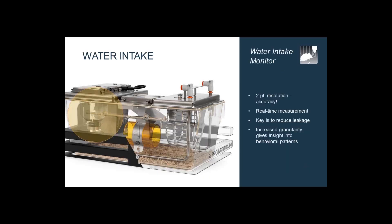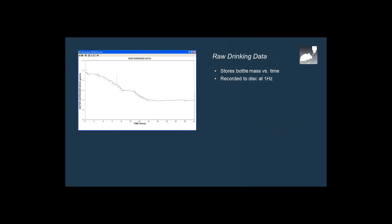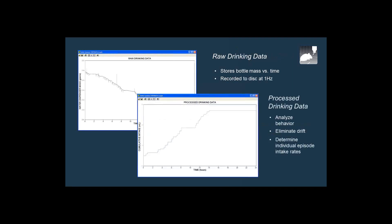Let's go on to water intake. This is exactly the same gravimetric principle as with food intake. Water intake does require really high resolution because most water intake events are really quite small, and this is the reason why gravimetric determination of water intake is not always an option that is used. Here is raw drinking data — you can see the individual water intake events, and those can be accumulated if you wish, or you can actually do detailed water intake analysis or water plus food intake analysis as well.